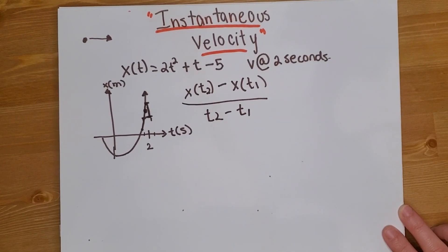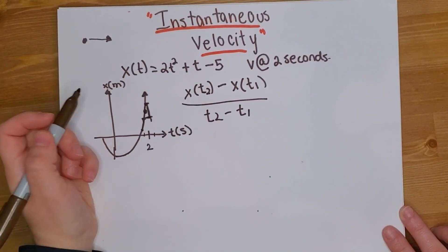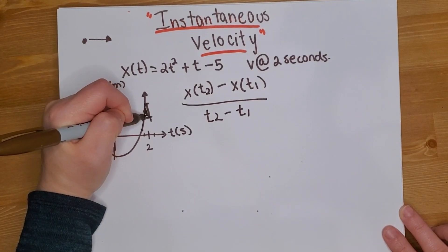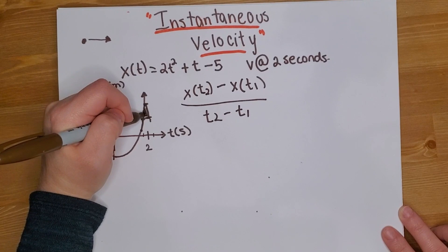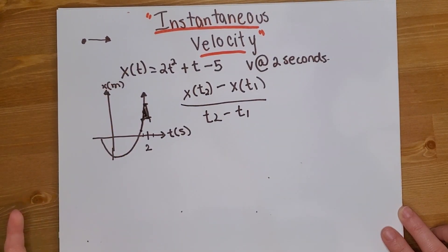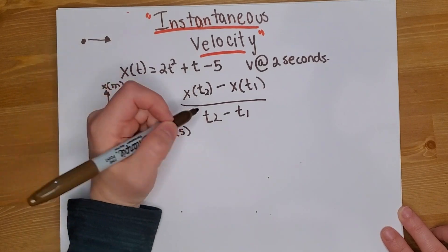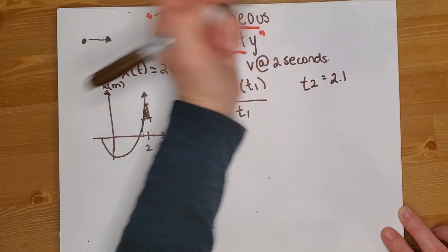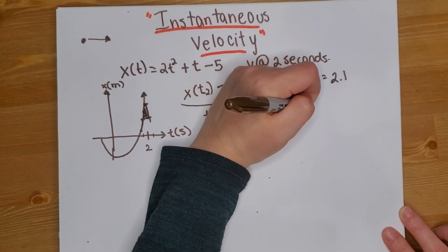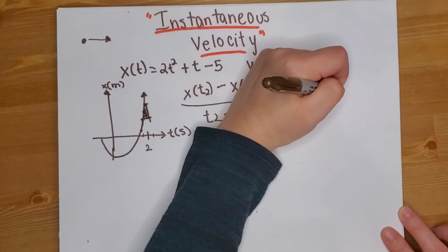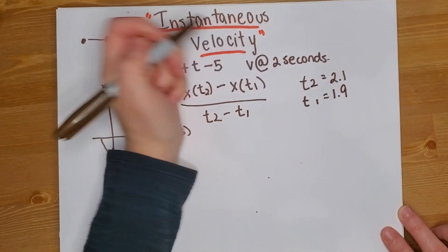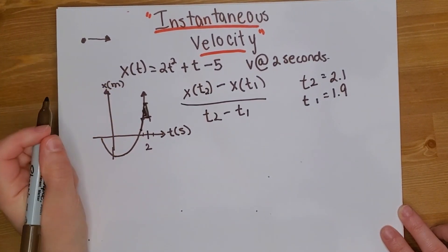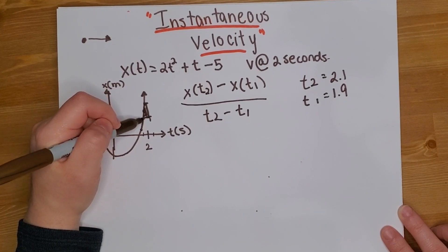So let's say that we want to approximate the instantaneous velocity by doing the same method. All we have to do is get a very very small value, so very close to 2. At this point, we can get my t₂ to be equal to 2.1, so it's 0.1 seconds after, and my t₁ going to be 1.9, which is 0.1 seconds before 2. That's very close to 2. So all I'm doing is getting the average velocity between 1.9 seconds to 2.1 seconds. That's a very good approximate at this point.